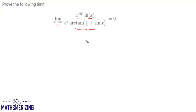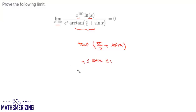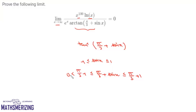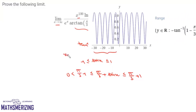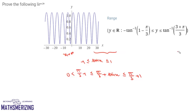First we look at the term tan inverse of pi by 3 plus sin x. We know that the value of sin x lies between minus 1 and plus 1. Adding pi by 3, we get pi by 3 minus 1 ≤ pi by 3 plus sin x ≤ pi by 3 plus 1. This value is greater than 0, and when x tends to infinity it is a nonzero oscillating value.